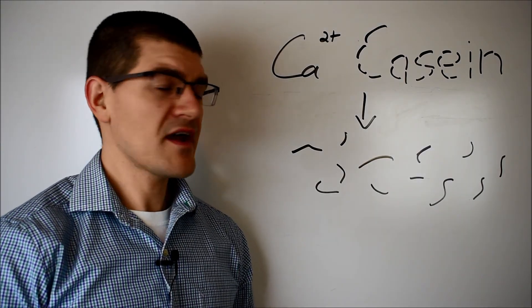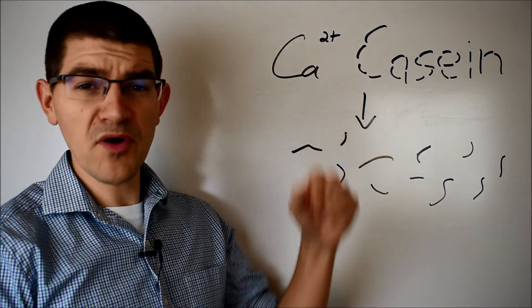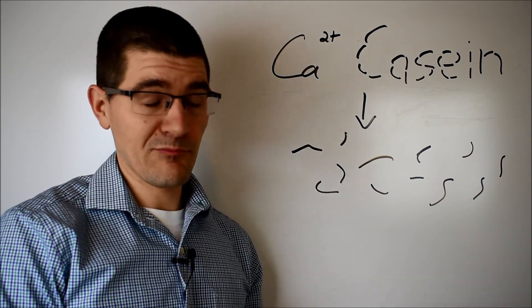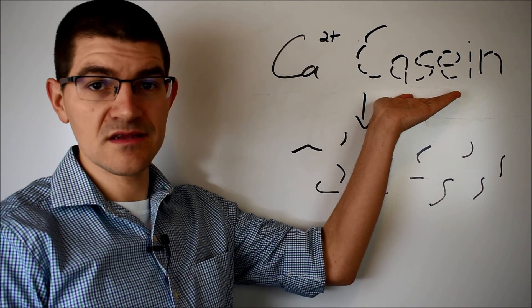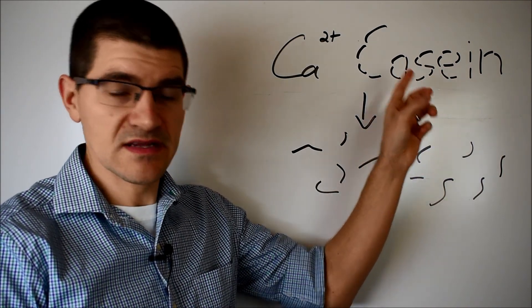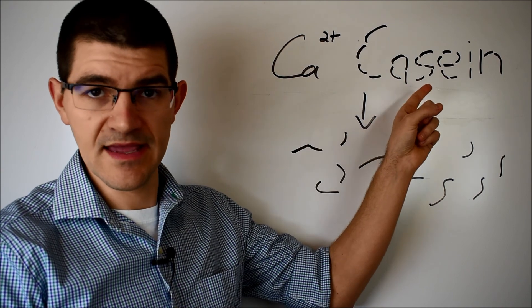The emulsifier sequesters calcium ions and breaks down the molecular forces that cross-link monomers in the greater casein protein network. Breaking that down, I've basically shown the casein here as being composed of a bunch of smaller monomeric protein pieces. That's also as artistic as I get.